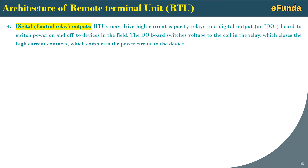Fourth, digital control relay output. The RTU may drive high-current capacity relays on a digital output board to switch power on and off to devices in the field. The digital output board switches voltage to the coil in the relay, which closes the high-current contacts and completes the power circuit to the devices.